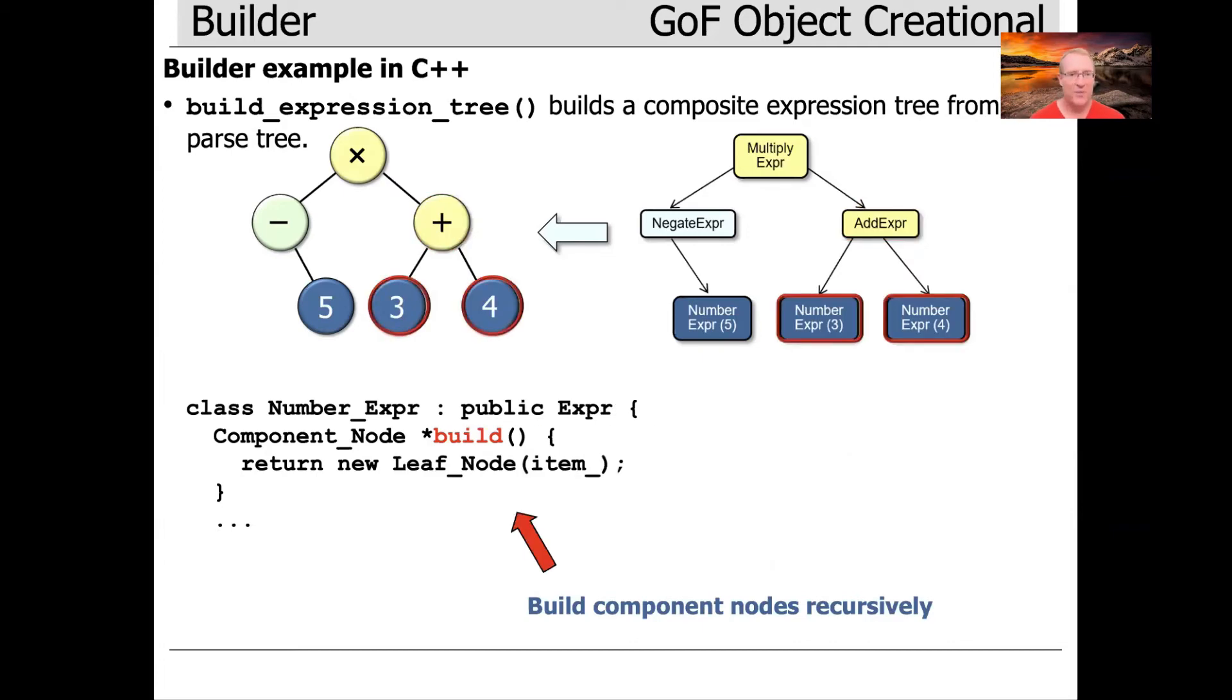Going down yet further, we would end up at the leaves of the tree where we have these num experts. So when a number expert is hit, it also inherits from expert. It's got a build method.